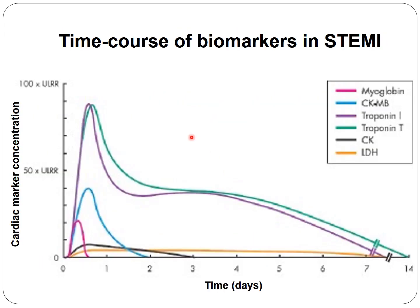These are the time courses of the biomarkers. The fastest is myoglobin, followed by CK and troponin, which share a similar peak. However, CK returns to normal after two to three days, while troponin remains elevated for one week. LDH starts to rise later, reaches a steady-state level, and lasts for months.